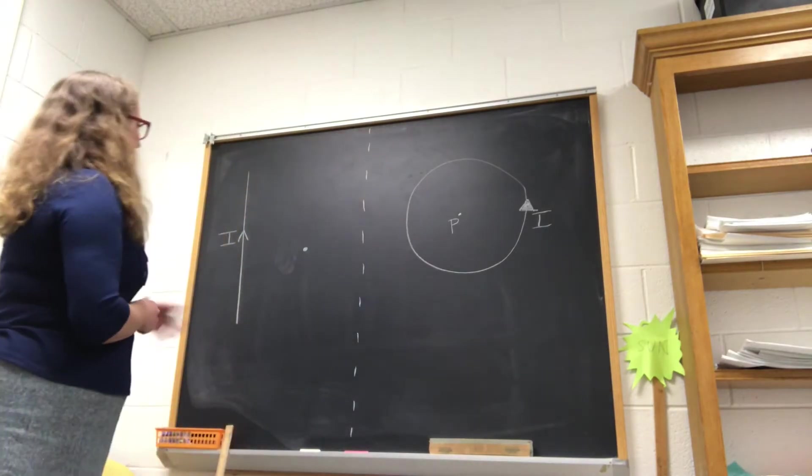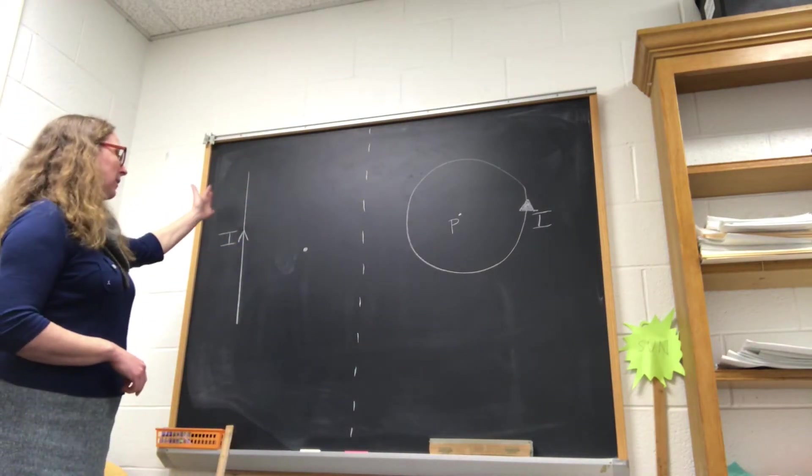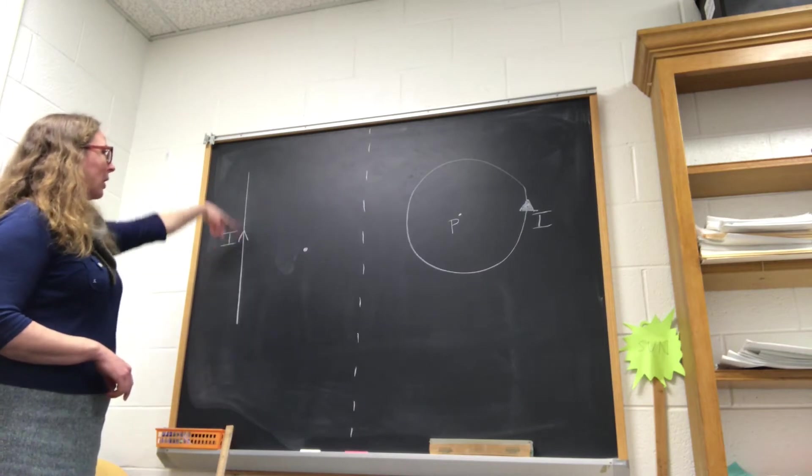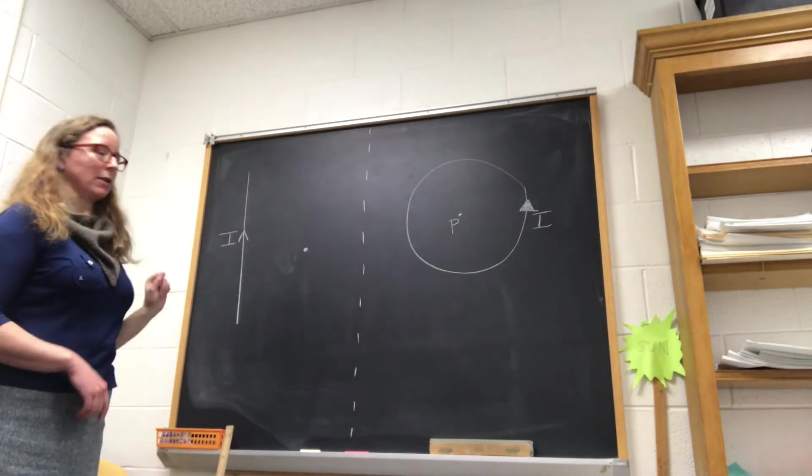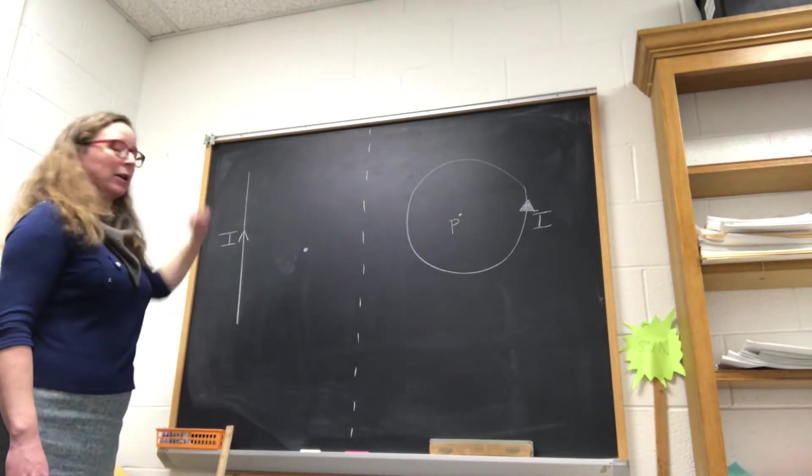What we have here are two different cases. We have the first case here on the left where we have a current that is going along a long straight wire, and that current is flowing upward.